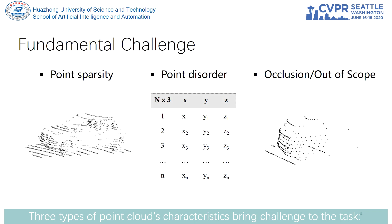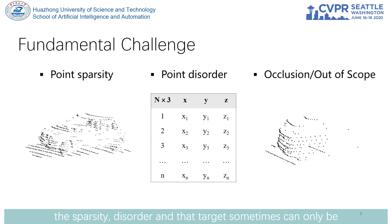Three types of point cloud characteristics bring challenges to the task: sparsity, disorder, and the fact that the target can sometimes only be partially observed — either occluded or out of scope.